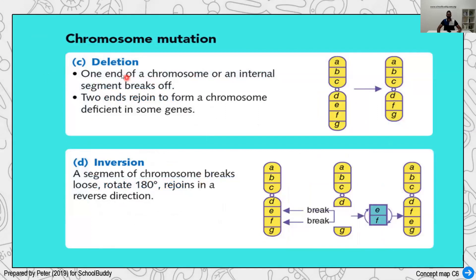A chromosome can also undergo deletion — a certain part of it is simply lost. For example, you have E in the normal chromosome, but in the mutant chromosome E is gone. Inversion is where a segment breaks off, rotates 180 degrees, and then fuses back. For example, if the break is at E and F, after inversion the sequence becomes F, E instead of E, F. So chromosome mutations include duplication, translocation, deletion, and inversion.